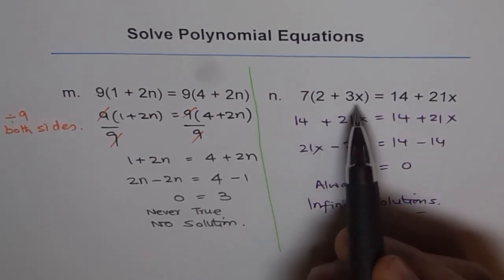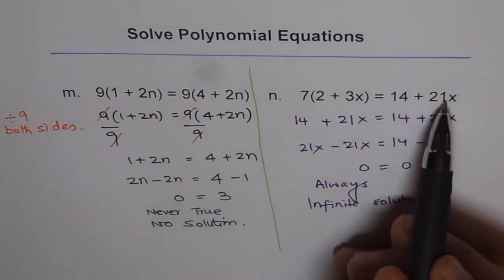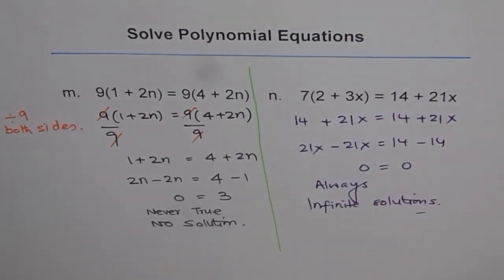So no matter what value of x you choose, if you put x as 0, what do you get? This term is 0, this term is 0, but 7 times 2 is 14, you get 14. Do you see that?